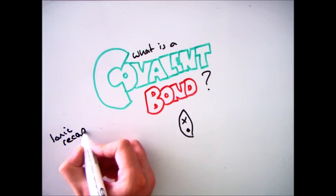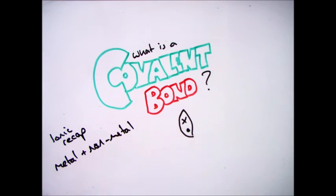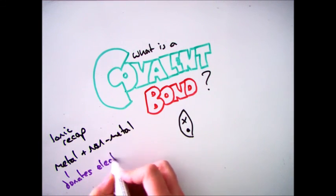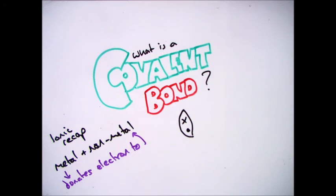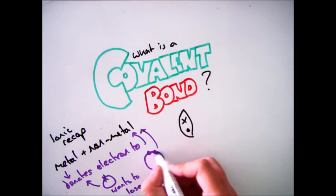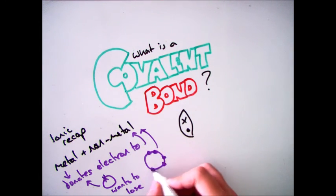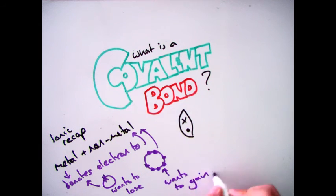In the previous videos we've focused on what ionic bonds were. As a recap, that involves a metal and a nonmetal, where the metal wants to donate an electron and give it to your nonmetal. So the metal wants to lose electrons to get a full outer shell, and the nonmetal wants to gain them to get a full outer shell.